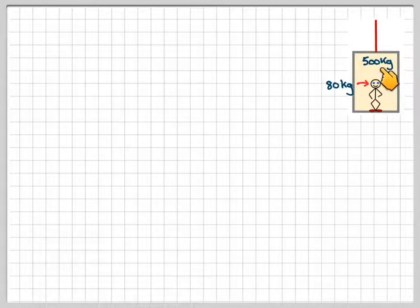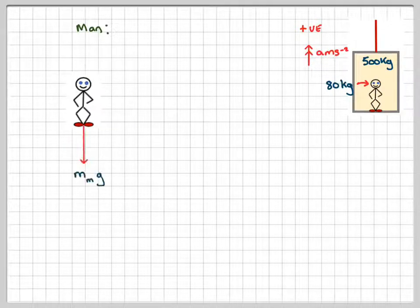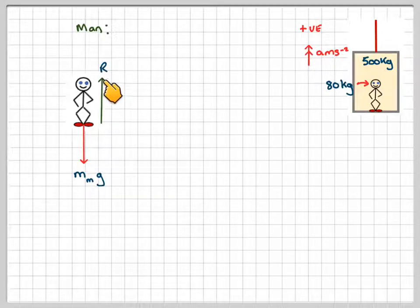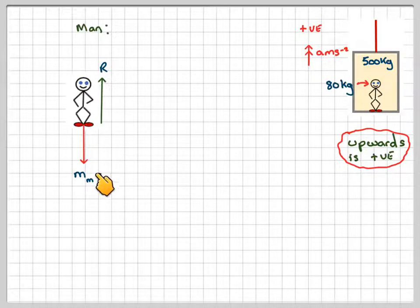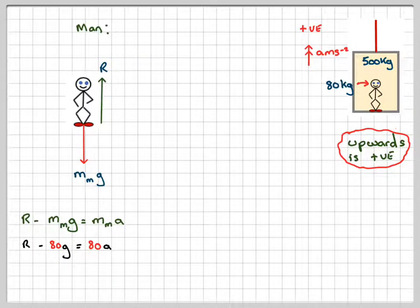We have a lift weighing 500 kilograms and a man of 80 kilograms. For the man, we take acceleration as upwards as positive. So we have the weight of the man, m_m times g, acting downwards, and the reaction R of the man standing on the lift acting upwards. The equation of motion gives R minus m_m times g equals m_m times a, so R minus 80g equals 80a, giving R equals 80a plus 80g.